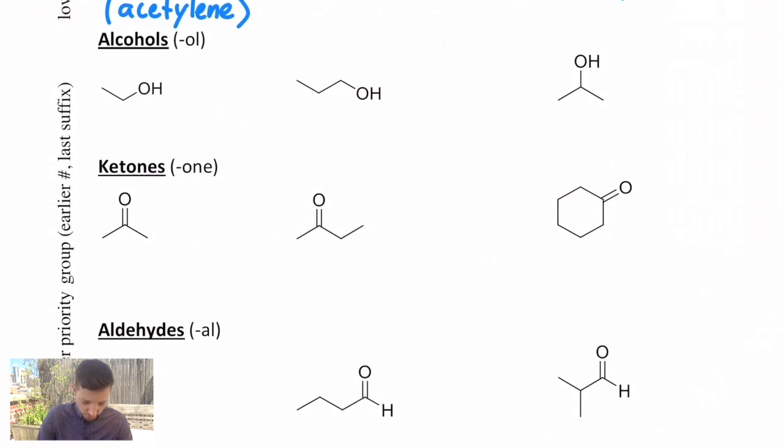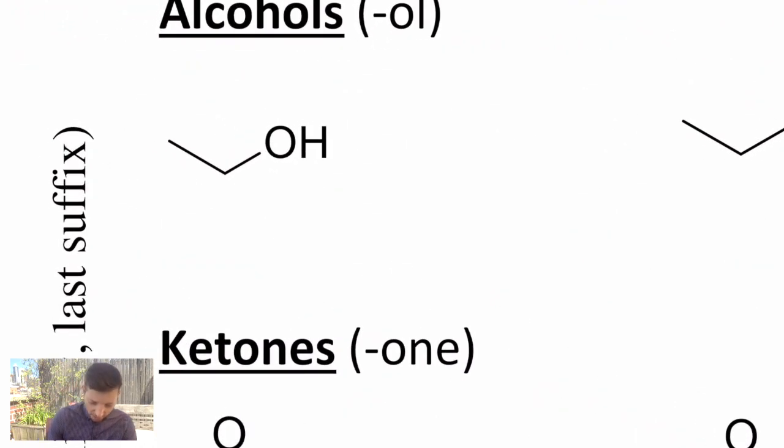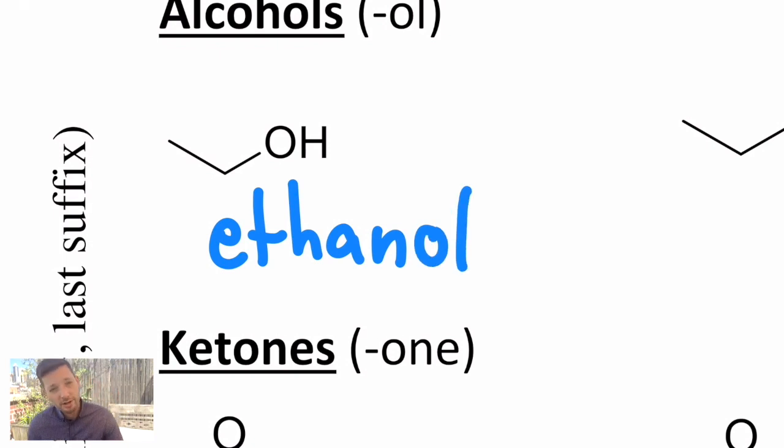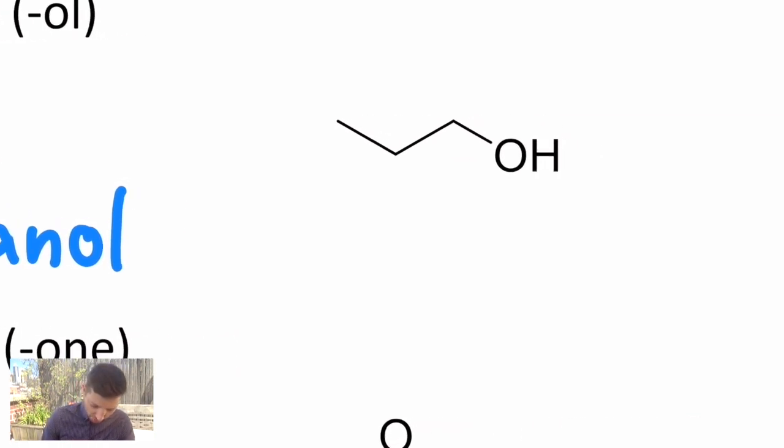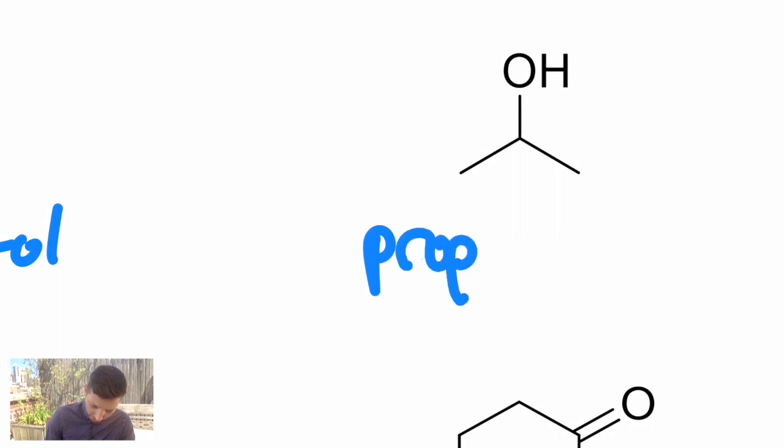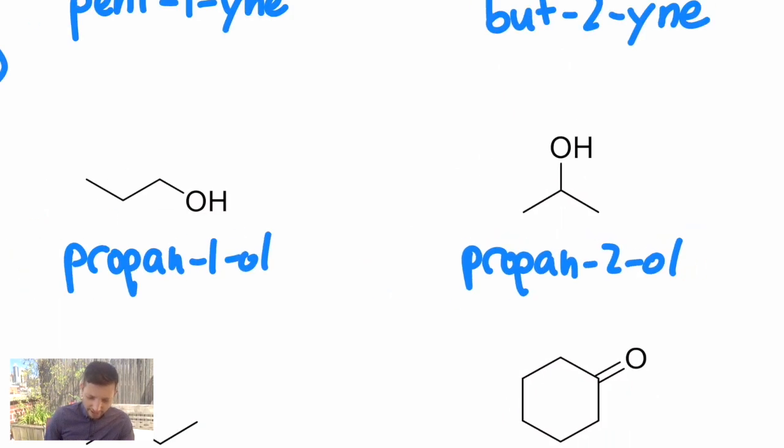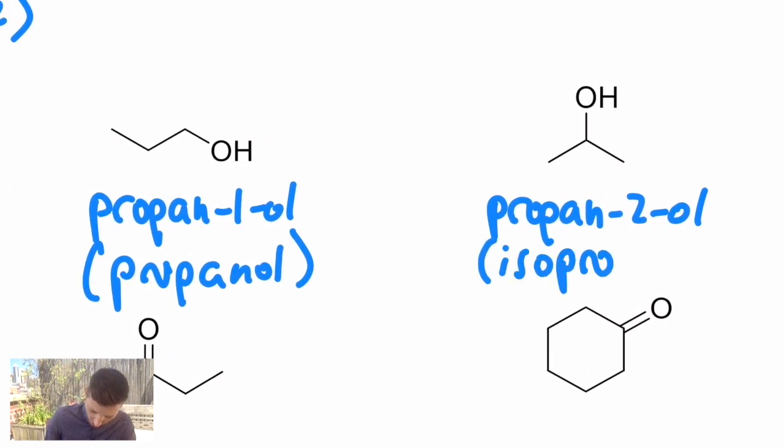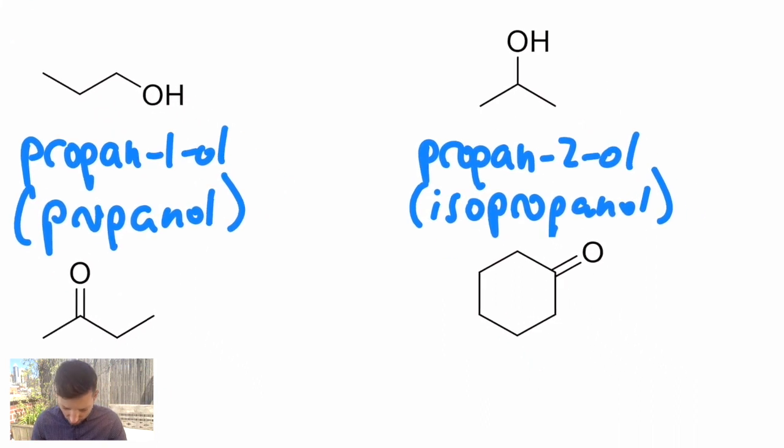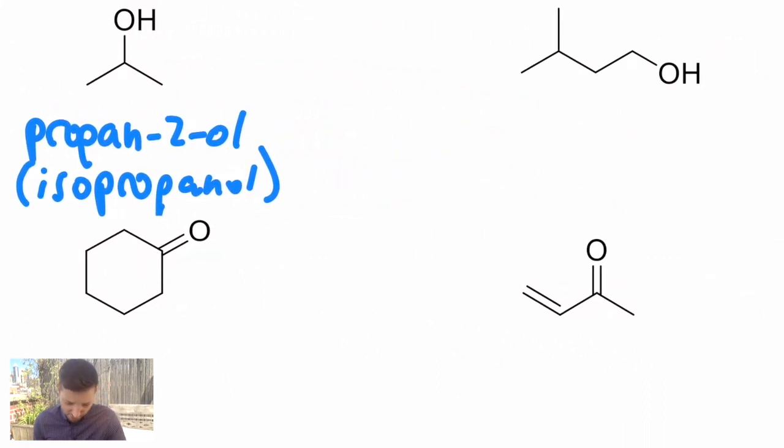Now let's get to oxygen-containing functional groups, starting with the alcohol. The alcohol on one carbon of a two-carbon chain changes ethane. You just drop the 'e' and add the suffix '-ol.' This is ethanol. Once I get to three carbons, there's two ways it can exist: propan-1-ol and its isomer propan-2-ol. The second one has a common name: isopropanol. That's the main ingredient in rubbing alcohol.